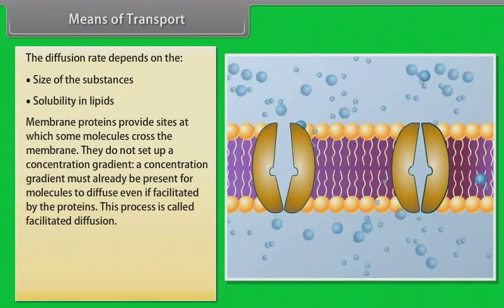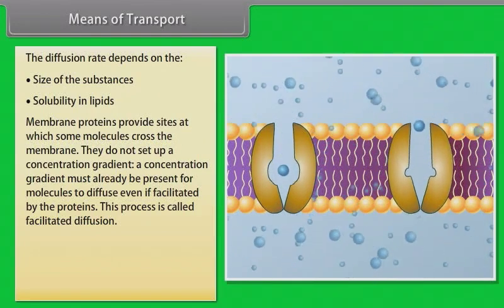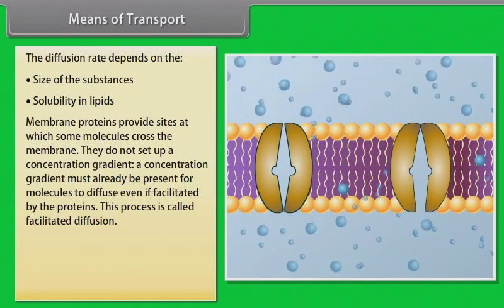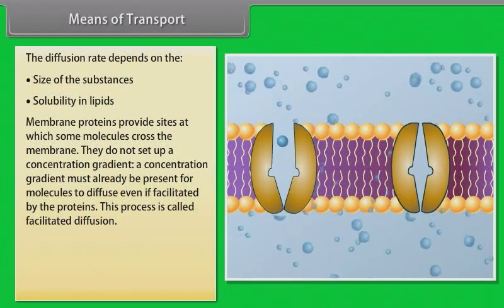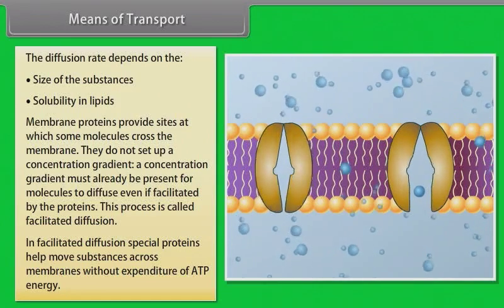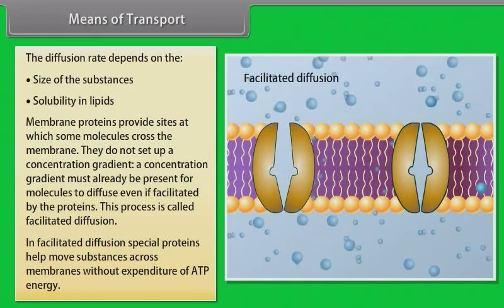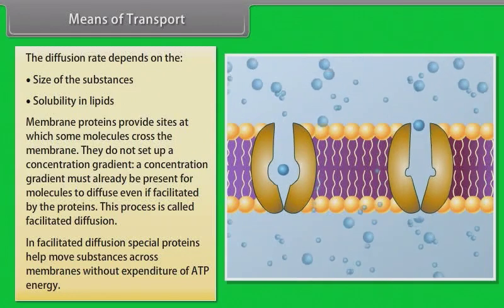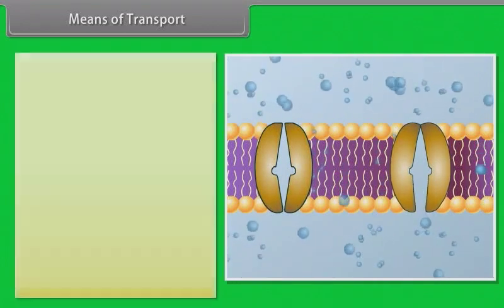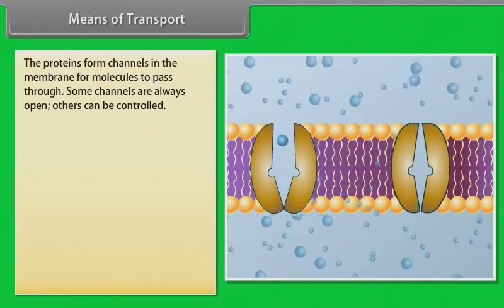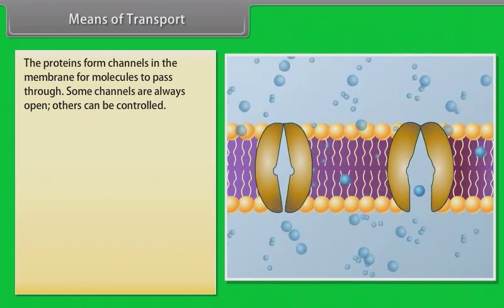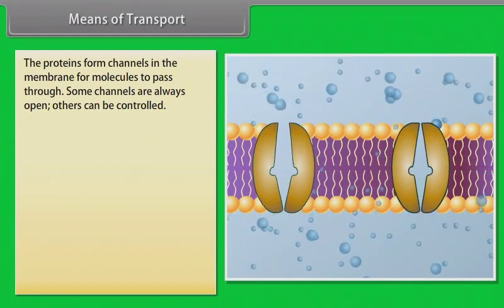Membrane proteins do not set up a concentration gradient; a concentration gradient must already be present for molecules to diffuse, even if facilitated by the proteins. This process is called facilitated diffusion. In facilitated diffusion, special proteins help move substances across membranes without expenditure of ATP energy. Facilitated diffusion is very specific — it allows the cell to select substances for uptake. The proteins form channels in the membrane for molecules to pass through. Some channels are always open, others can be controlled; some are large, allowing a variety of molecules to cross.